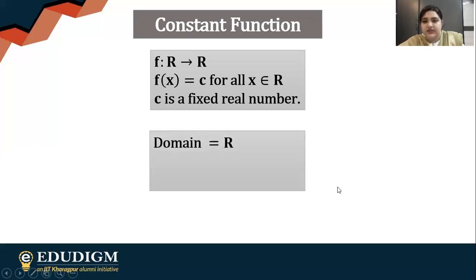The domain is R because it's defined for every possible real value. The co-domain is the second set and the range is c. This part is very important. Range is the collection of all possible outputs. Here the output is only c. So that is why this is the range.